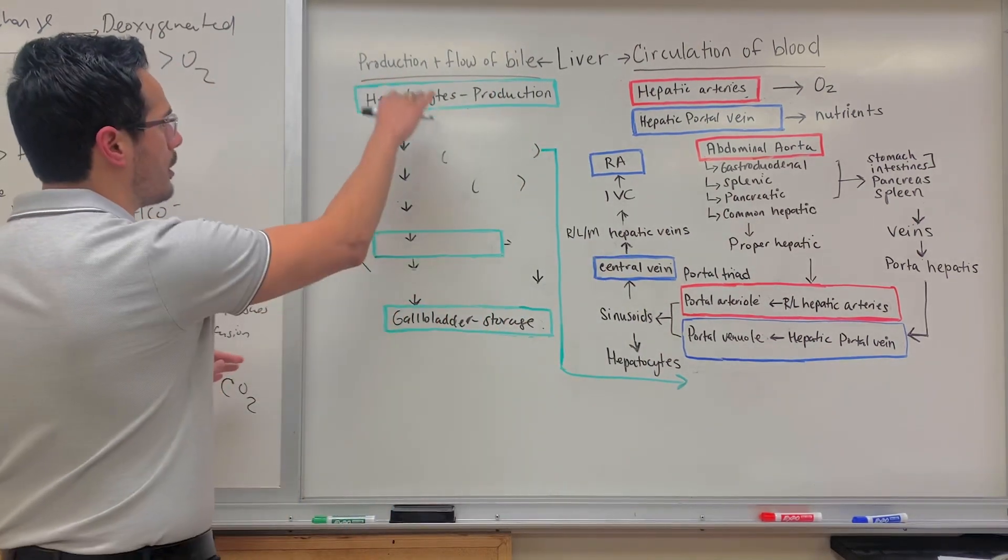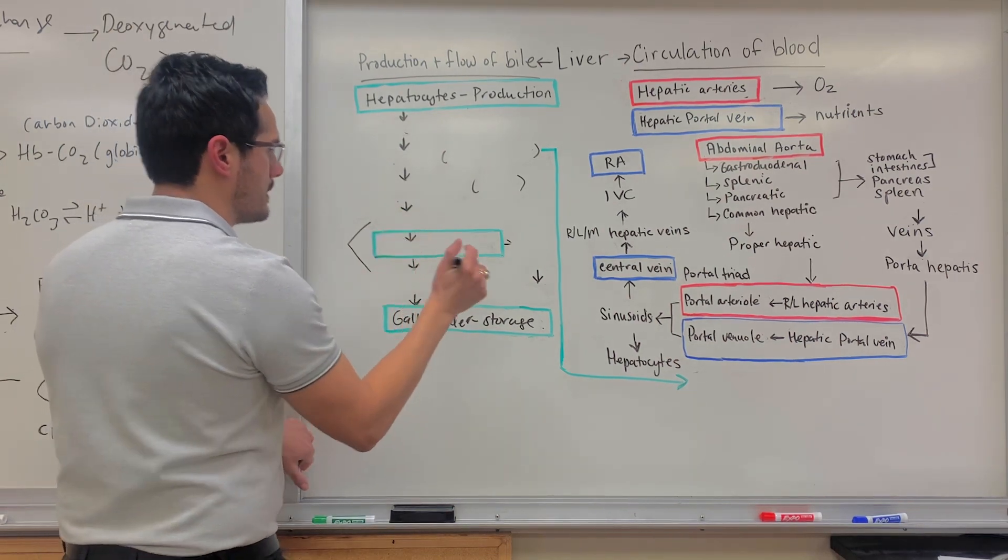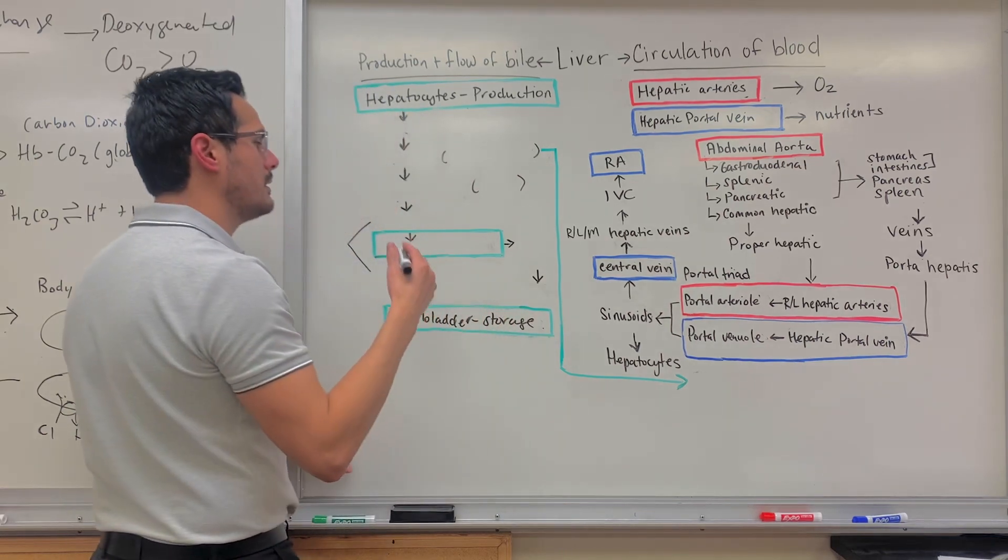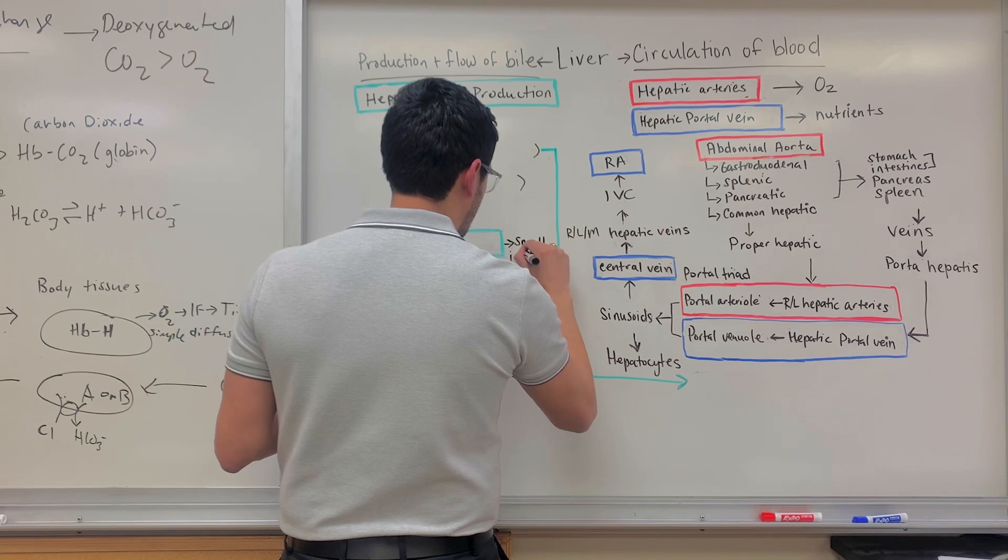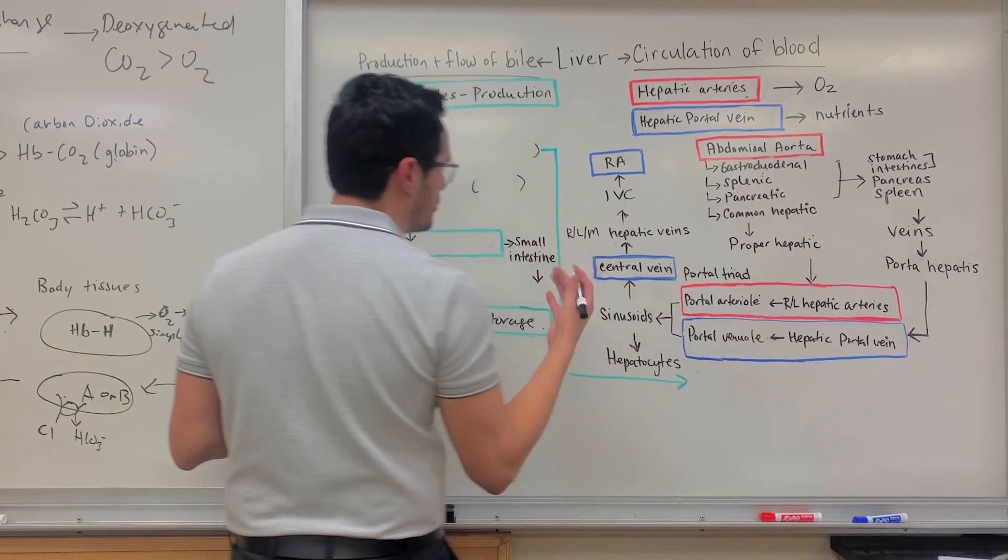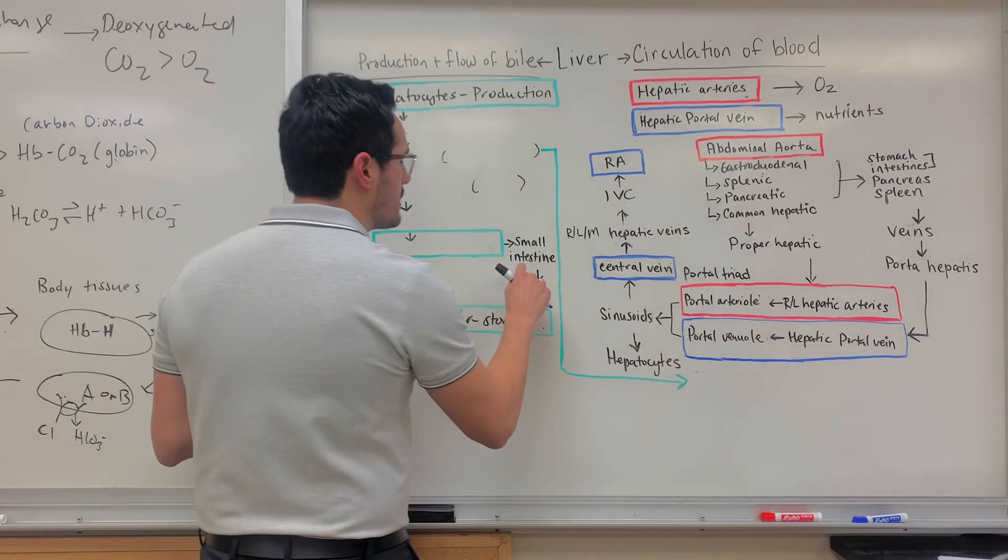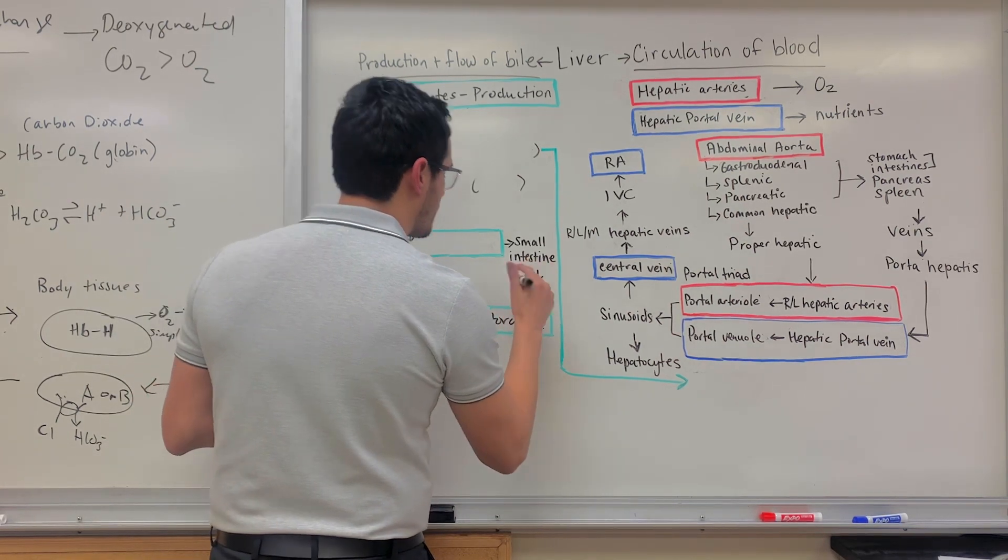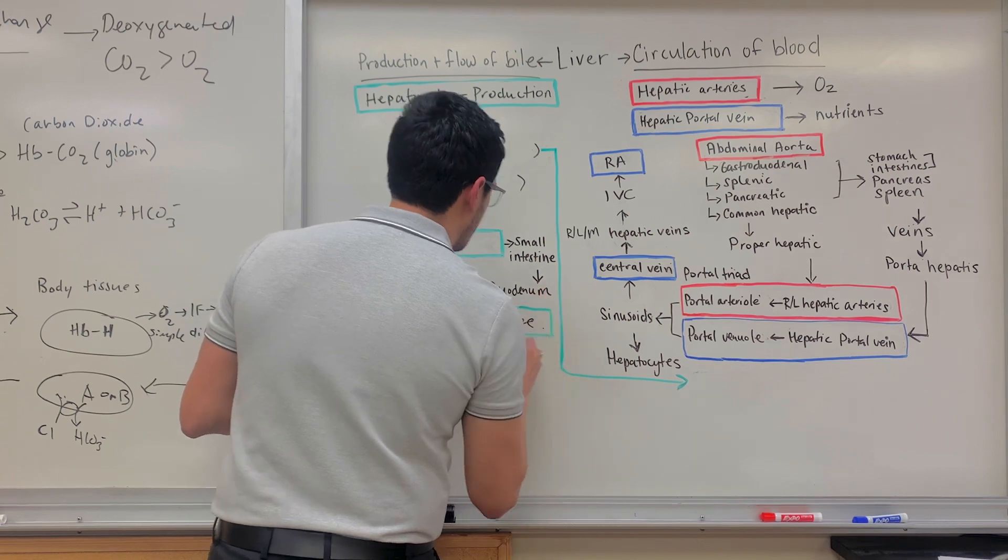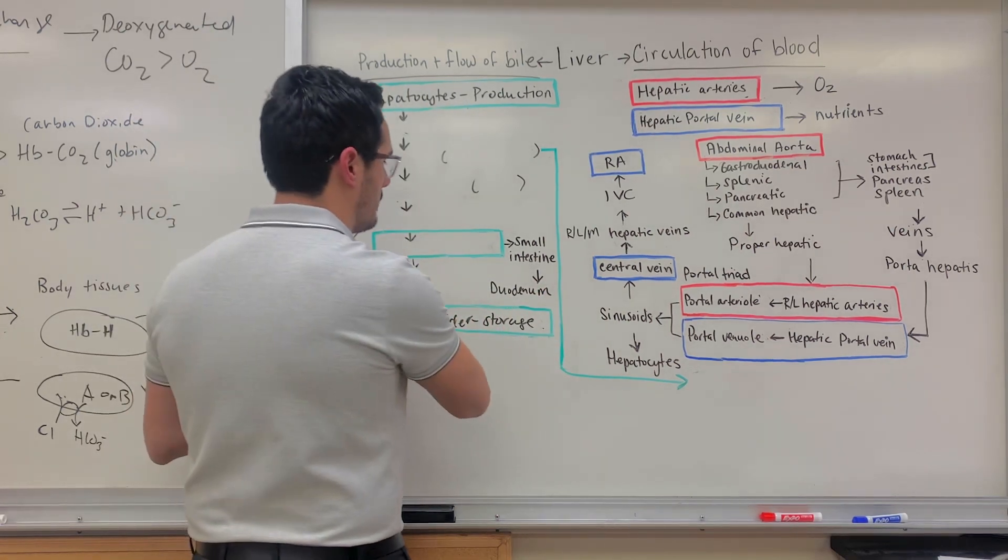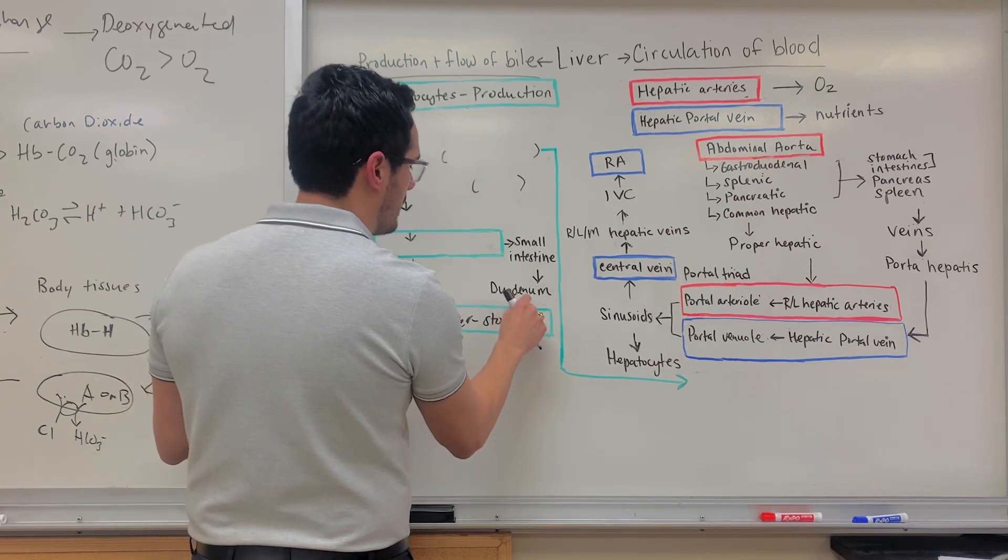And so the flow of bile - one of the key points is how does the bile get into the small intestine? Because within the small intestine, this is where the nutrients are absorbed. So this is why we want to break it apart. So a specific region within the small intestine, which is known as the duodenum, this is primarily where absorption occurs. This is where we're releasing the bile into the duodenum.